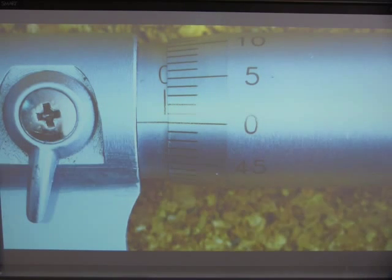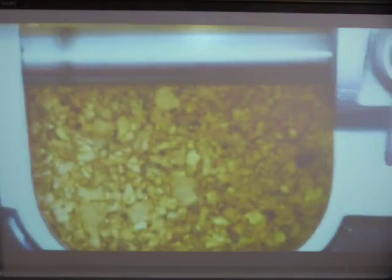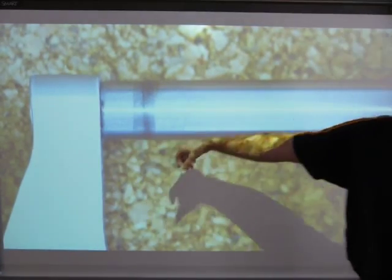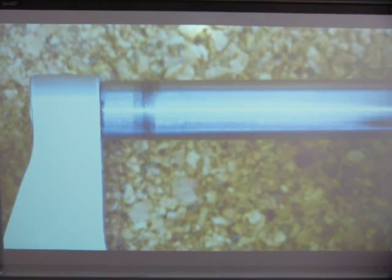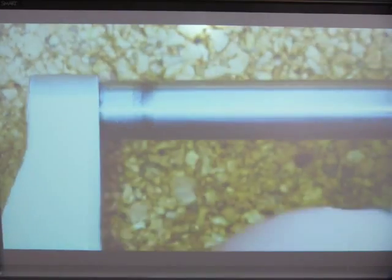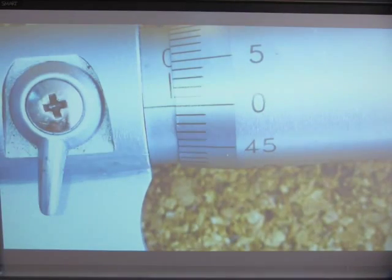When it is at zero zero zero, you have to make sure that the anvil and the spindle close and there's no gap between the two of them. So that would be calibration, or make sure that your measurements are correct before you take a measurement and find them to be out.